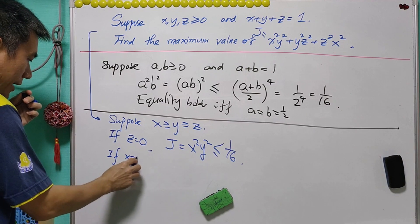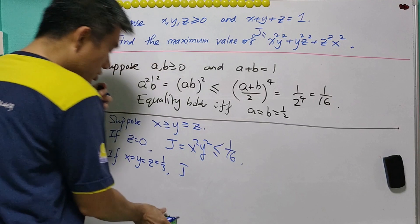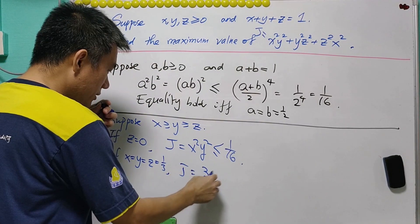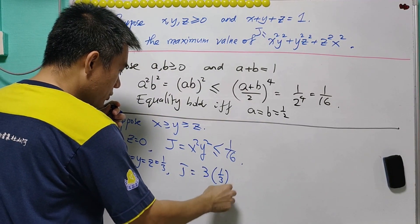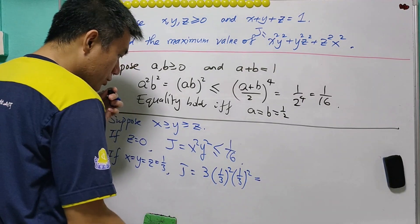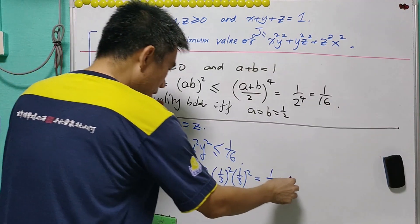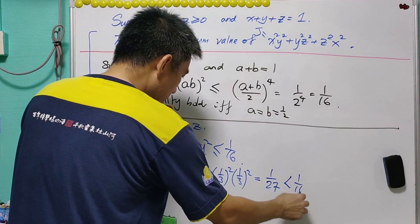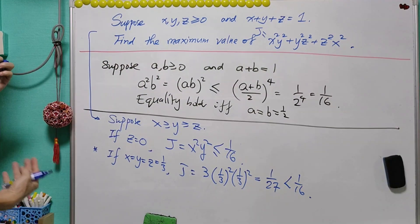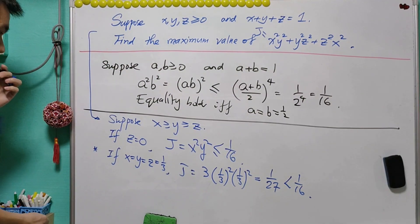What happened for x equals y equals z equals 1 over 3? In this case, j will be equal to 3 times 1 over 3 squared, 1 over 3 squared. That will be equal to 1 over 27. And 1 over 27 is obviously less than 1 over 16. It means that the maximum of j does not occur if x equals y equals z.